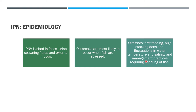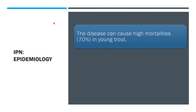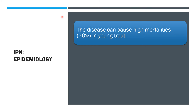fluctuations in water temperature and salinity, and management practices requiring handling of fish. Outbreaks may occur at water temperatures as low as 4°C and as high as 18°C. The disease can cause high mortalities, up to 70% in young trout.